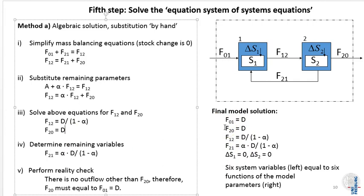We can write down the list of equations and solutions for the final model solution. Here you see each of the six remaining system variables as an equation of the parameters. One flow is D, one other flow is a function of D and alpha, the stock changes are zero. On the left side you have only system variables, and on the right side you have only parameters or zero. Six system variables on the left equal to six functions of the model parameters on the right. In practice, many MFA systems are simple enough that we can proceed and calculate the solution by hand.